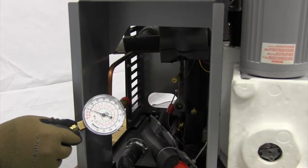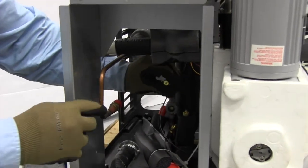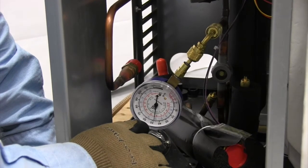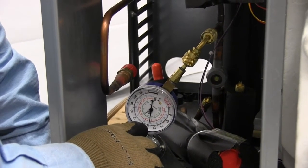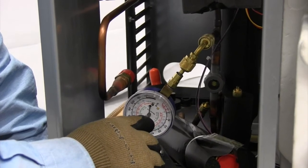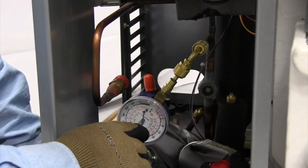Next we're going to use our refrigeration gauge to make sure that our holding charge is still present. The pressure should read between 40 and 50 pounds. That's going to ensure that your holding charge is still in your system. If it's not, then please contact Follett.